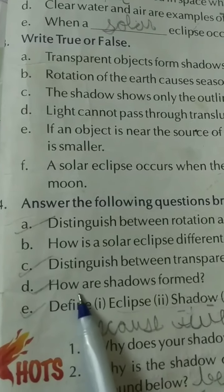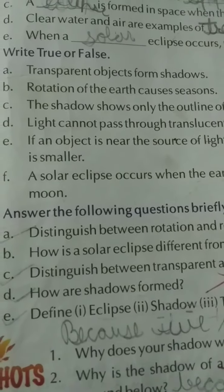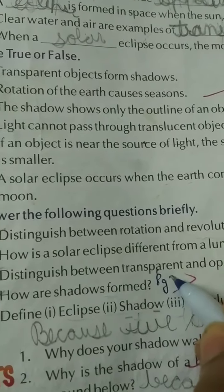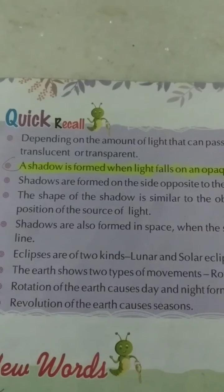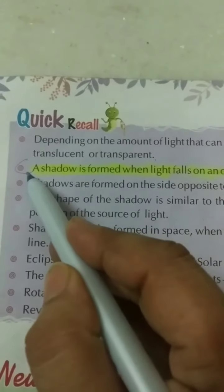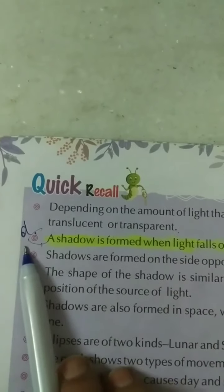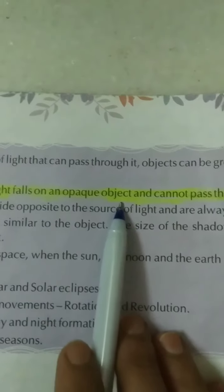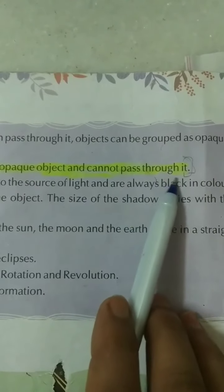Part D question: How are shadows formed? See page number 74, quick recall, second point. This is answer for D part. A shadow is formed when light falls on an opaque object and cannot pass through it.